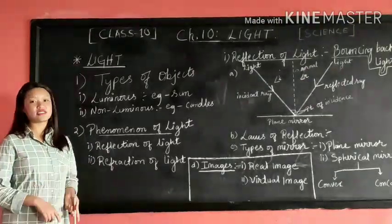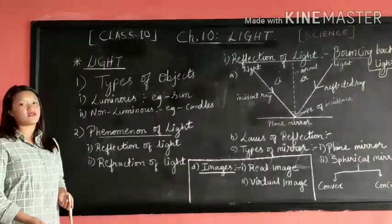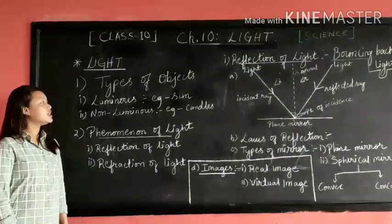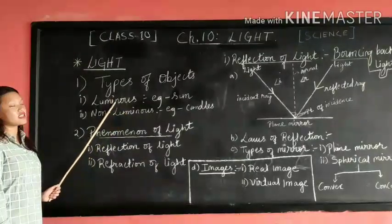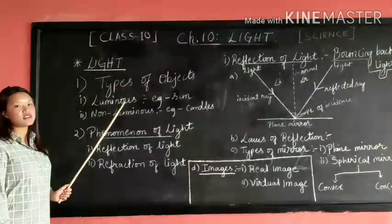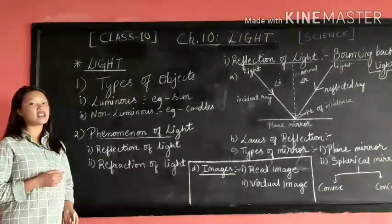We also have two types of objects depending upon the light, that is luminous and non-luminous objects. First of all, let us see what is luminous object. Luminous objects are those objects that emit their own light. They are also known as natural source of light. Example: sun.